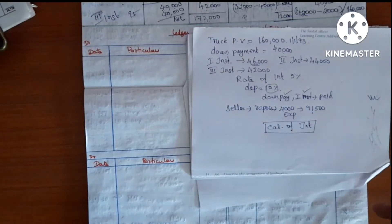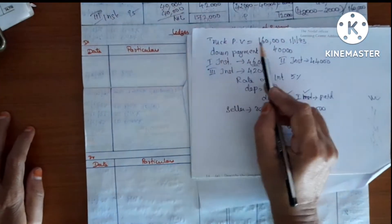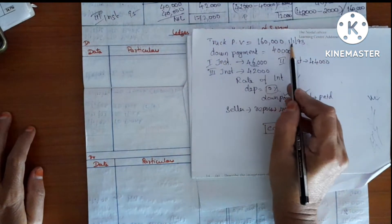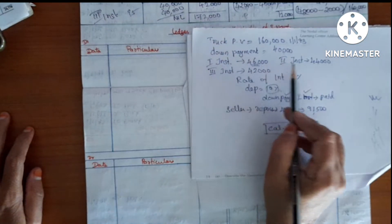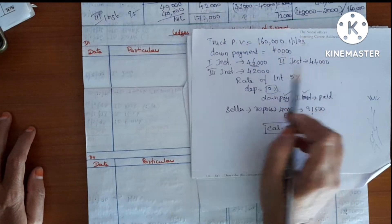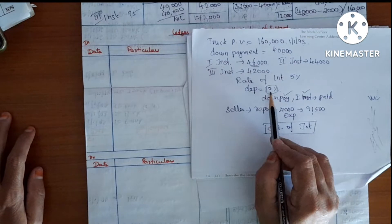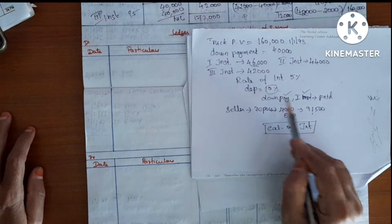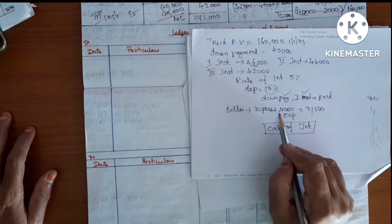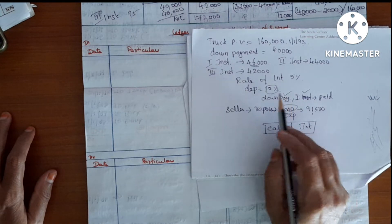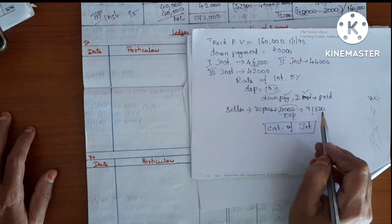Repossession is the default and complete repossession is the repossession. Truck order value 1,60,000 — 1,193 — down payment 40,000, first installment 46,000, second installment 44,000, third installment 42,000, rate of interest 5%, depreciation 10%. Down payment and first installment were paid. The truck was repossessed with 4,000 expenses, and the repossessed sale value is 91,500.